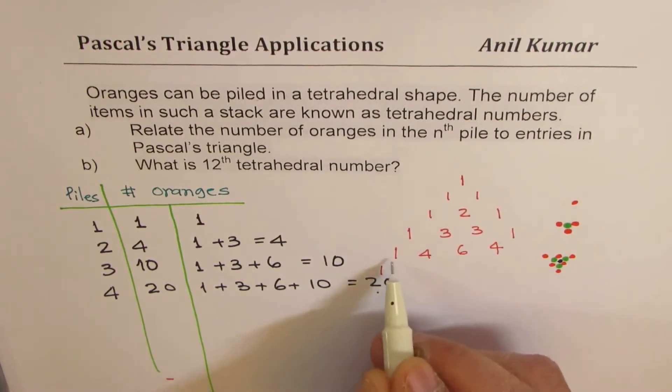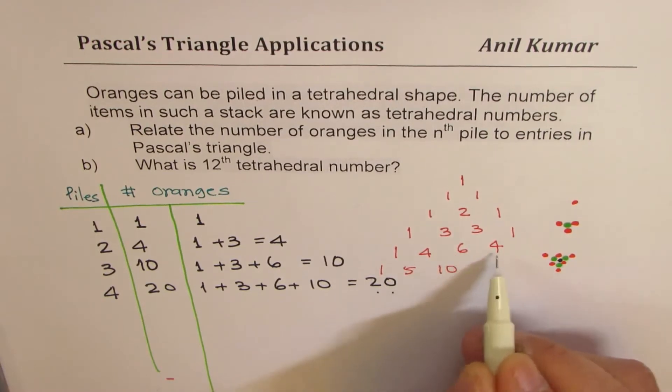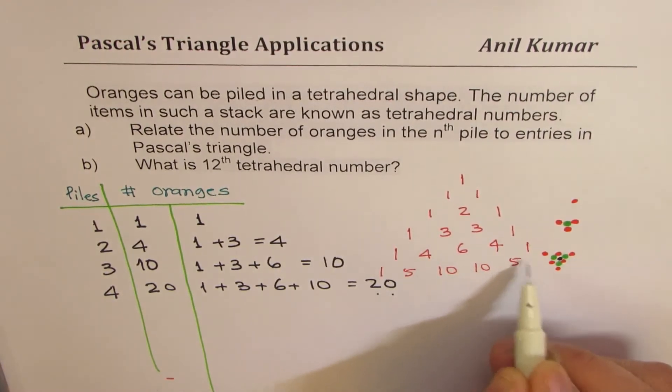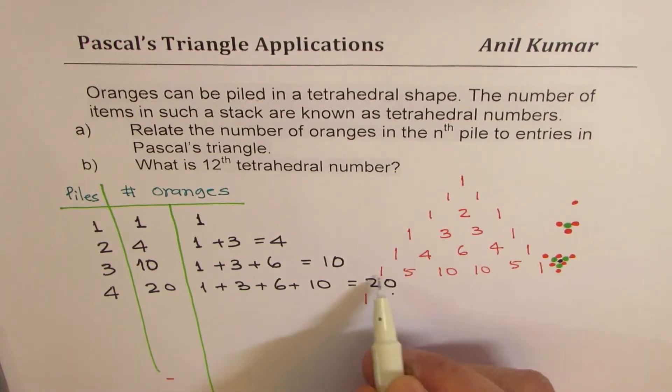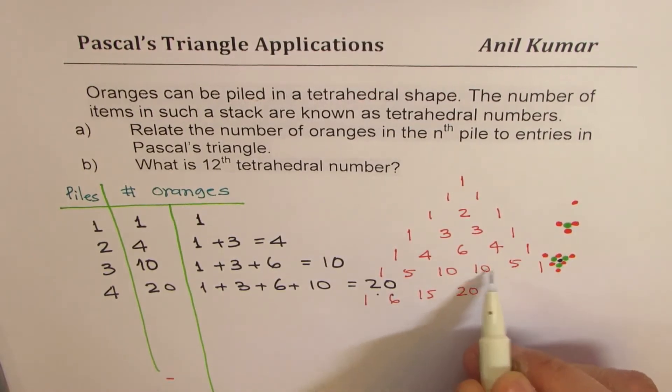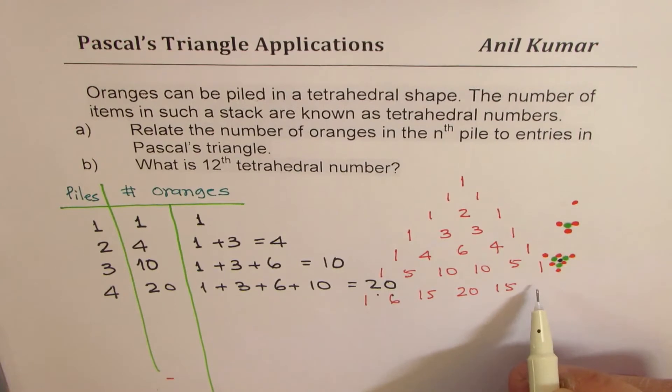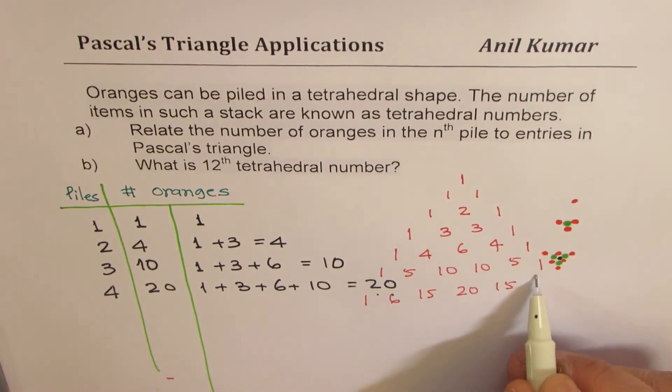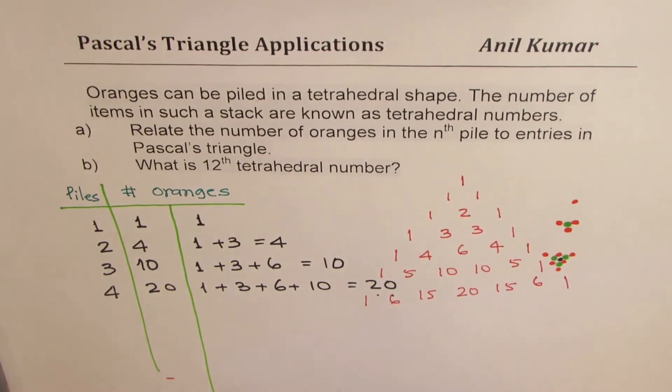The fifth row, one. Four plus one, five. Four plus six, ten. Six plus four, ten. I didn't write one here. One plus four, five, and then one again. And if I go further down, one plus five, six. Five plus ten, fifteen, ten, ten, twenty. Ten and five, fifteen. Five and one, six. And then one. Got it?